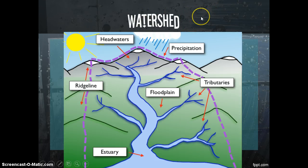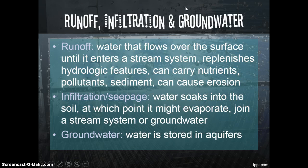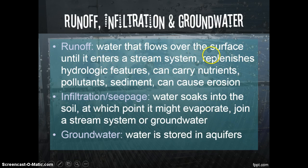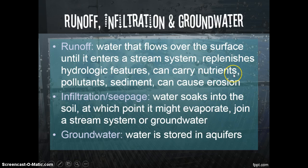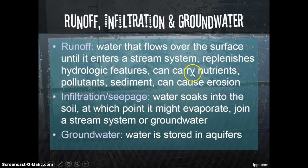Once precipitation falls, there are two major things that can happen to it. Either it runs off — literally runoff — flowing over the surface until it enters a stream system or tributary, replenishing streams, lakes, and ponds so that water levels stay constant. One thing associated with runoff is that it carries nutrients with it. Since water is such a great universal solvent, it dissolves a lot of things, including pollutants, and can carry sediments — causing erosion. This is both a good and bad but important part of the whole cycle.